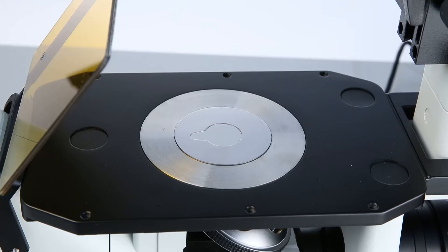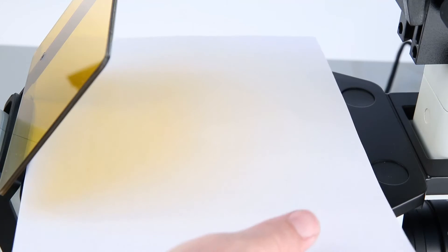You can use any stage plate as long as light can pass through. Then you'll place a piece of blank white paper on top of the stage. This in essence becomes our projector screen.